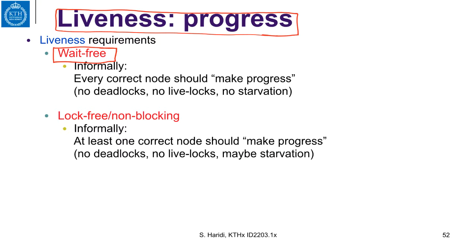An algorithm is lock-free or non-blocking if at least one correct process can make progress. This is a weaker liveness condition. In this case, there are no deadlocks where processes wait for each other, and no livelocks where processes exchange messages without making progress. But there might be starvation, where some processes cannot make progress.